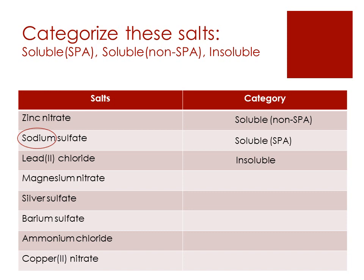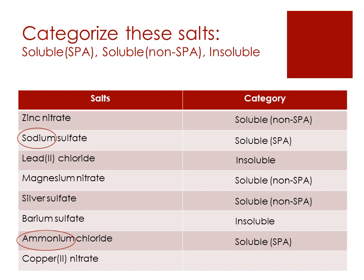Magnesium nitrate is a soluble non-SPAR salt, as all nitrates are soluble. Silver sulfate is also a soluble non-SPAR salt. Barium sulfate is an insoluble salt. Ammonium chloride — from the word ammonium, we can categorise it as a soluble SPAR salt. And lastly, copper 2 nitrate is a soluble non-SPAR salt.